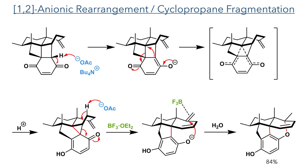Once the cyclopropane ring has formed, the molecule is once again deprotonated, triggering the fragmentation of the cyclopropane ring and reforming an enolate, which is highly favoured due to the restoration of aromaticity within the ring. The addition of boron trifluoride to the reaction mixture then activates the exo-alkene, allowing the enolate to undergo intramolecular attack, forming the product in an 84% yield.